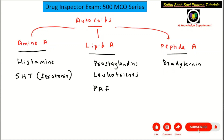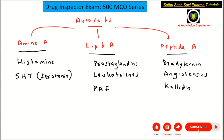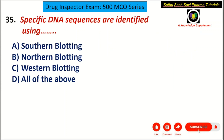Examples of peptide autacoids include bradykinin, angiotensins, and calidin. The question asked which is a peptide autacoid — the correct answer is B: angiotensin.